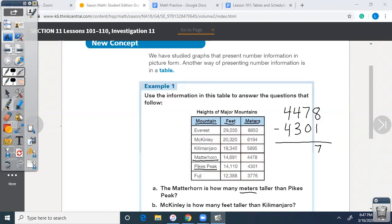8 minus 1 is 7, 7 minus 0 is 7, 4 minus 3 is 1, 4 minus 4 is 0. So it is 177 meters taller than Pikes Peak. Matterhorn is 177 meters taller than Pikes Peak. That's the answer to that one.